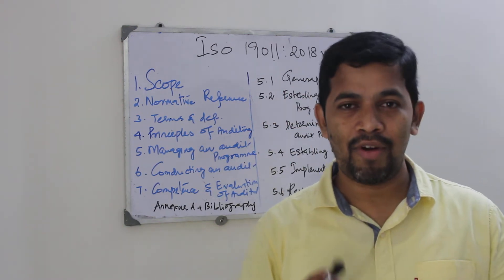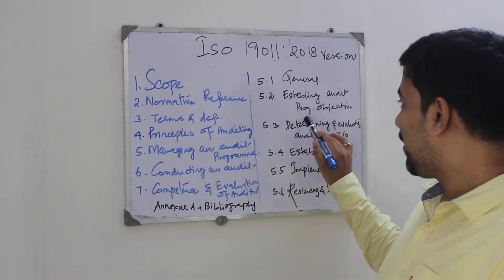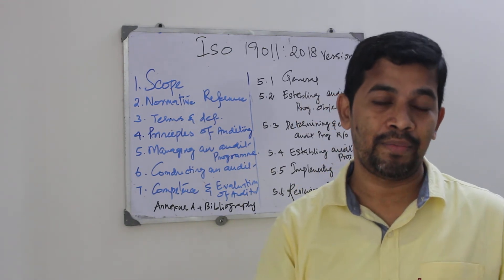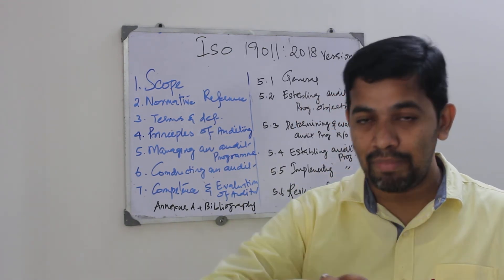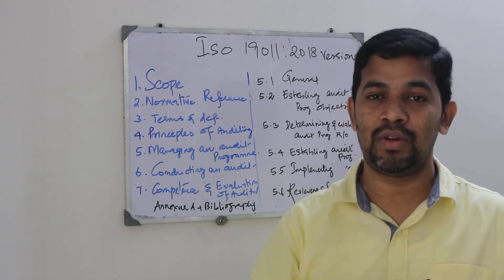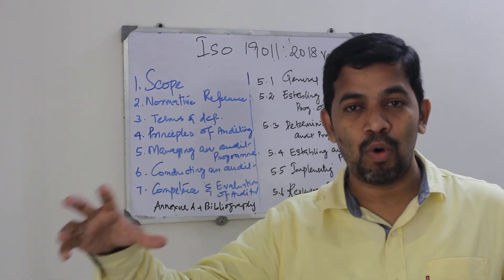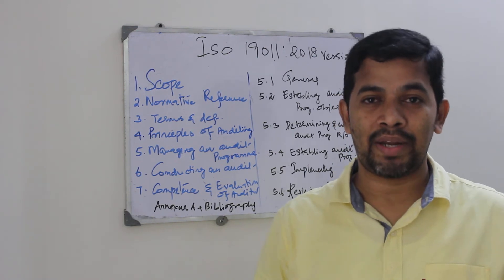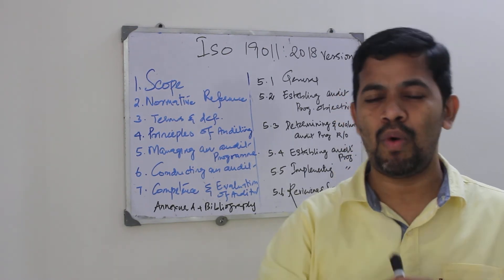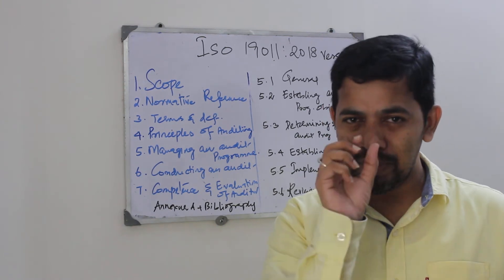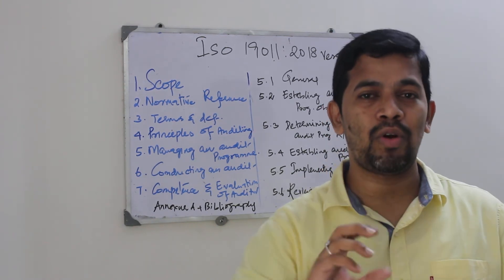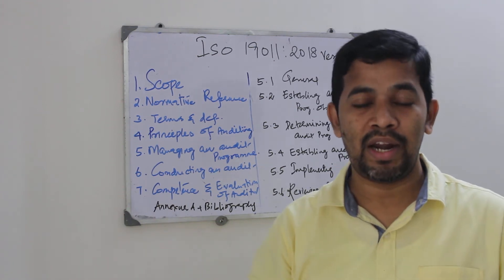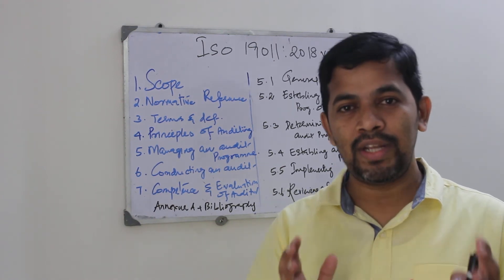Then clause 5.2 is establishing an audit program objective — what is the objective of this audit? Which is the main function, which is the supporting function, which function has more customer concern, which function has more impact, more internal issues, more warranty issues? All of these things help you create precise objectives so that your whole audit program will be more focused and result-oriented.